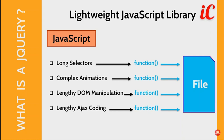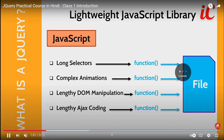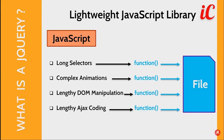So what is the meaning of 'j'? J is JavaScript — long selectors, complex animations, and lengthy DOM manipulation. These are a few key terms available in jQuery. We are having so many contents in the following features.